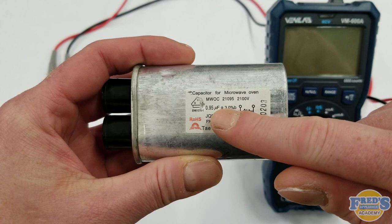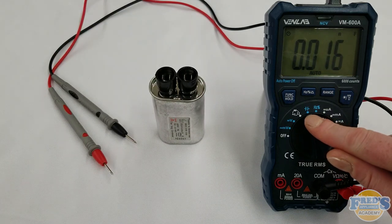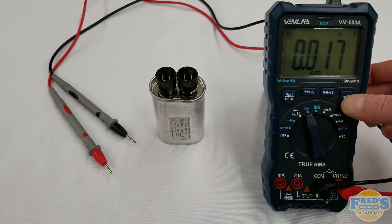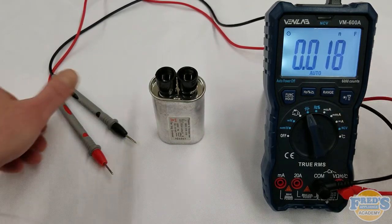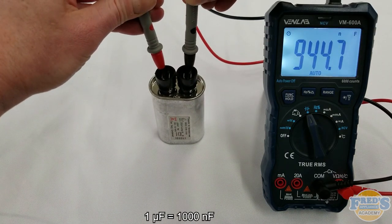To test your microwave capacitor, set your multimeter to capacitance. This will look like two parentheses facing away from each other. Next, take your meter leads and place each lead on one set of the capacitor's terminals.